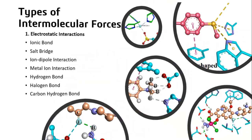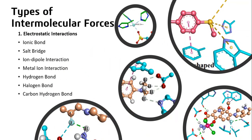What are the different types of intermolecular forces? Number one is electrostatic interactions, which include ionic bond, salt bridge, ion-dipole interaction, metal ion interaction, hydrogen bond, and carbon-hydrogen bond. In some literature, hydrogen bond, halogen bond, and carbon-hydrogen bond are included in Van der Waals forces.